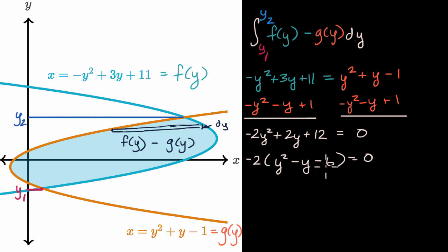This we can factor from inspection. What two numbers when we add equal -1, when we take their product we get -6? That would be -3 and 2. So this is -2(y - 3)(y + 2) = 0. The points of intersection are y = 3 and y = -2. So the lower bound is y = -2 and the upper bound is y = 3.